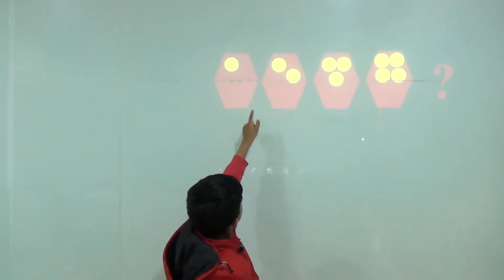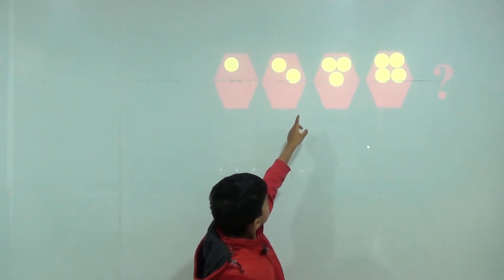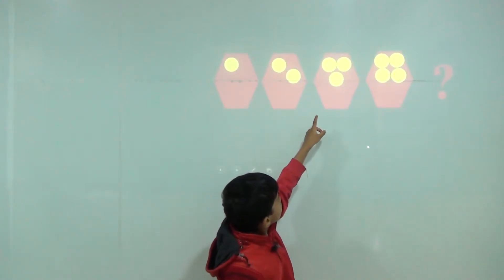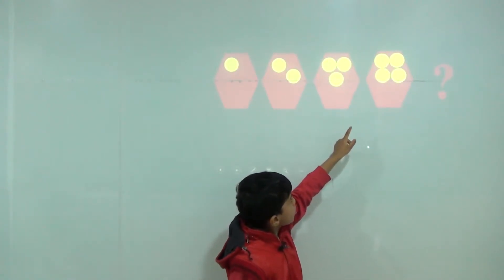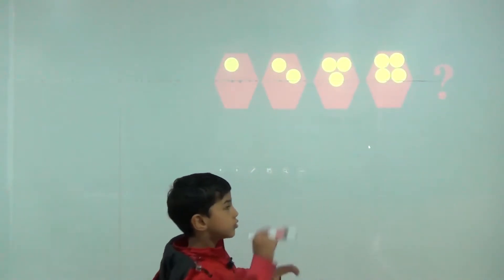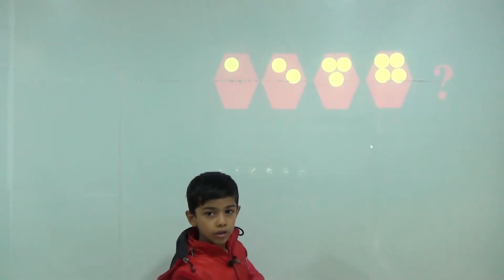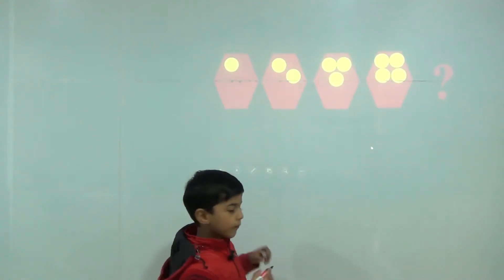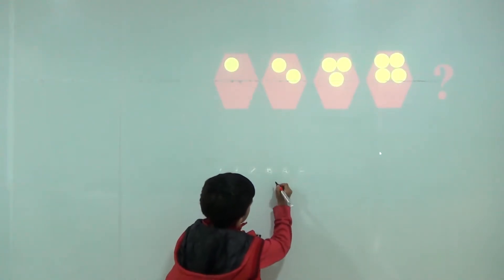One circle, two circles, three circles, four circles. So now five circles.